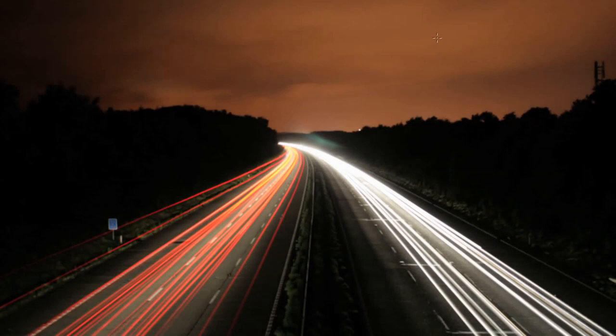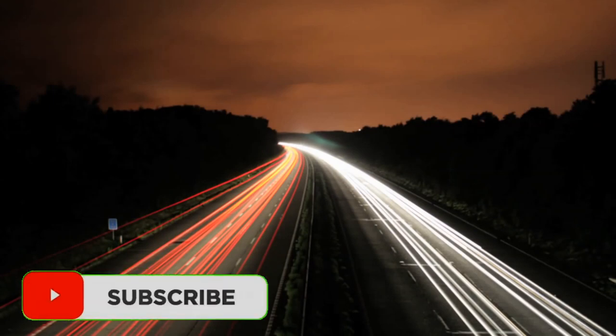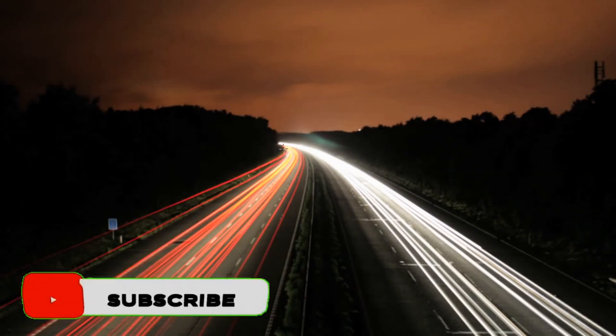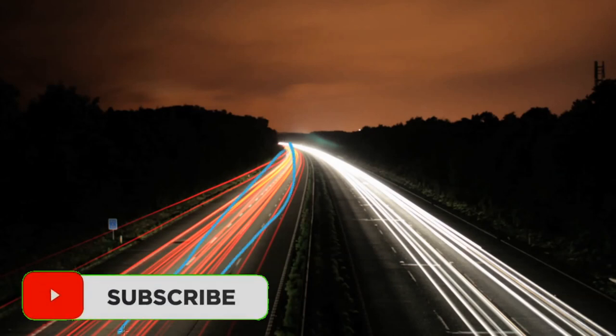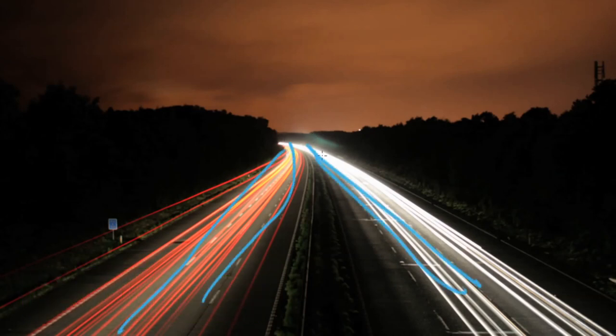So have you guys ever wondered what makes photos look like this? You know, you have these images of time lapses of roads with cars driving on them, and you see all the lights sort of stringy and time-lapse-y?